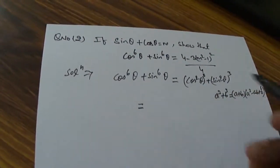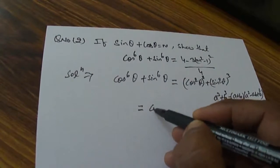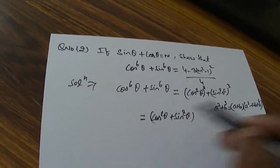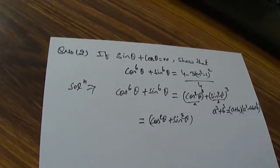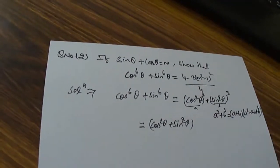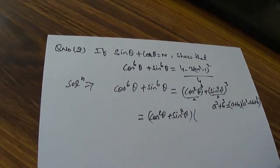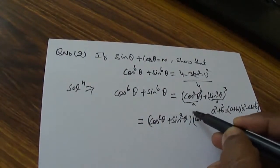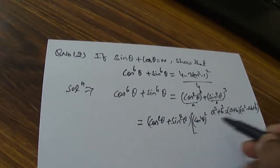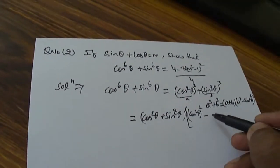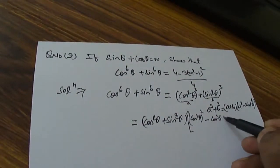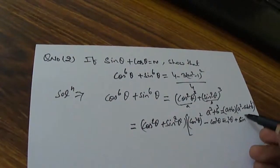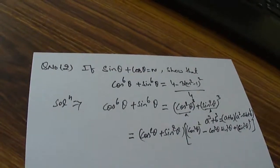So applying the identity, we get: cos squared θ plus sin squared θ — which is a plus b — multiplied by cos squared θ whole squared, minus cos squared θ times sin squared θ, plus sin squared θ whole squared. We have assumed cos squared θ as a and sin squared θ as b.